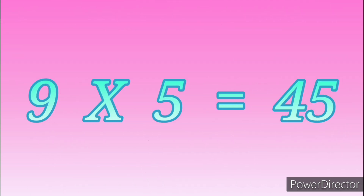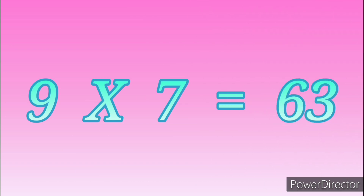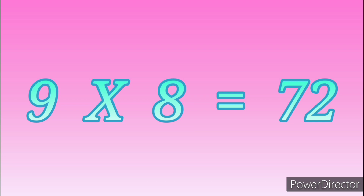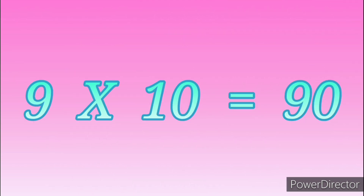Nine fives are forty-five. Nine sixes are fifty-four. Nine sevens are sixty-three. Nine eights are seventy-two. Nine nines are eighty-one. Nine tens are ninety.